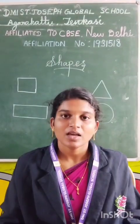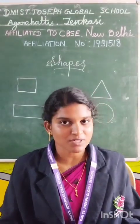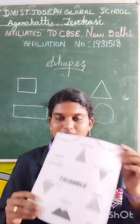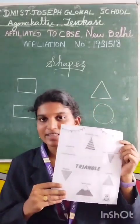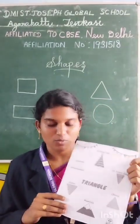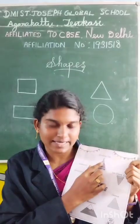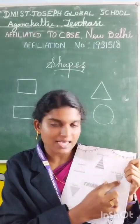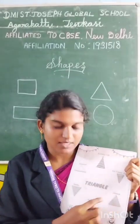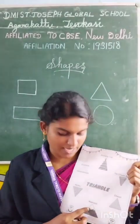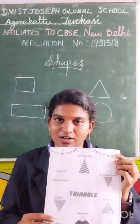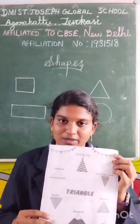Now I am going to show some examples of triangle shape. These are the examples of triangle shape. What are they? Ice cream cone, cheese, mountain, sandwich. These are the examples of triangle shape.